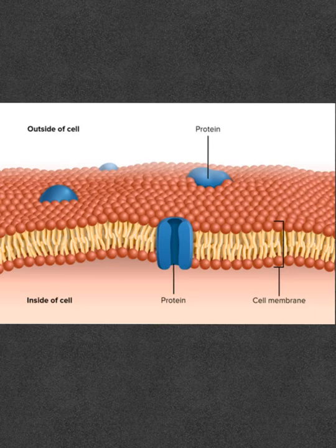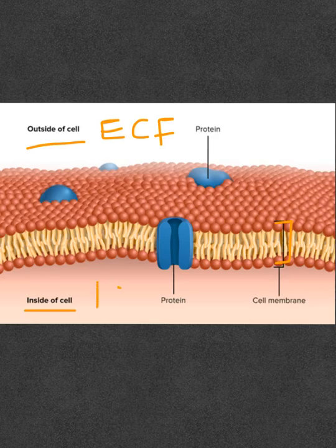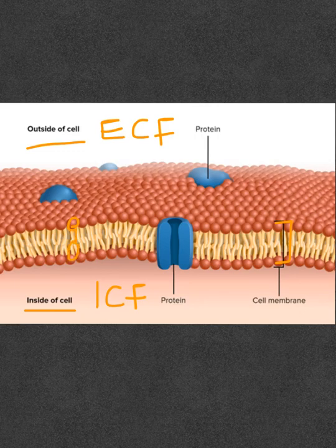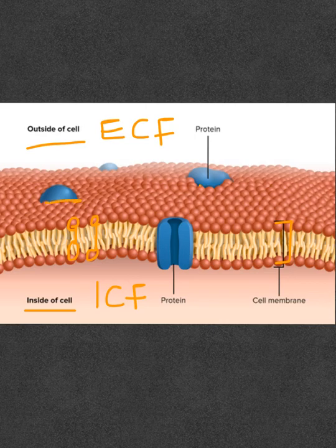This image here shows the structure of the cell membrane. Here is the cell membrane; outside of the cell you have the extracellular fluid, and inside the cell you have the intracellular fluid. The cell membrane is mainly made up of the phospholipid bilayer. In between that you have protein molecules dispersed between the phospholipid bilayers.